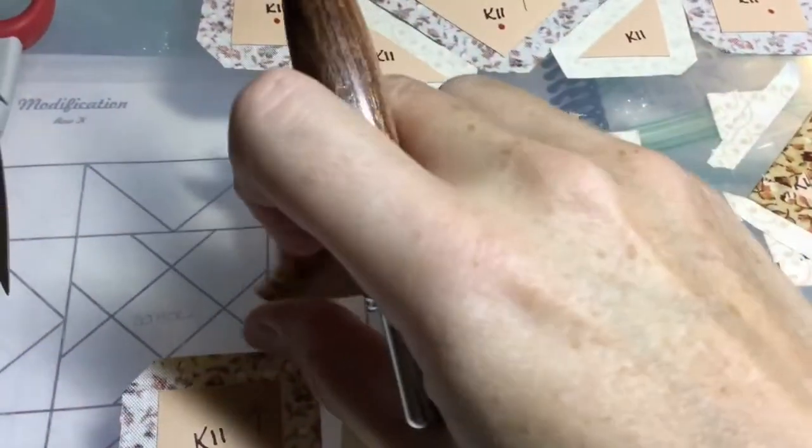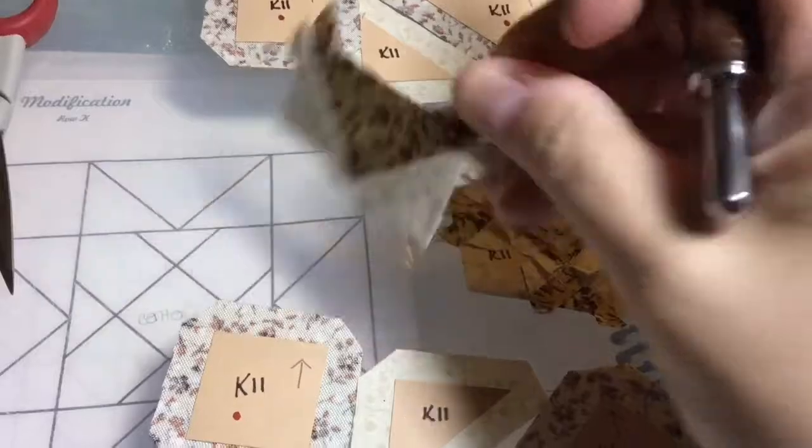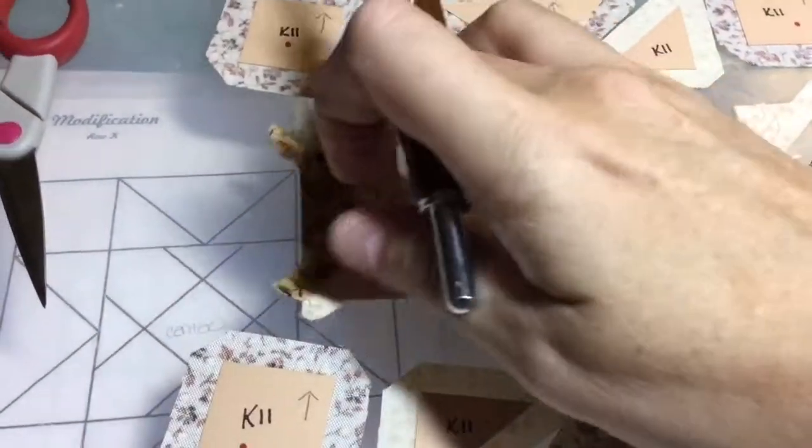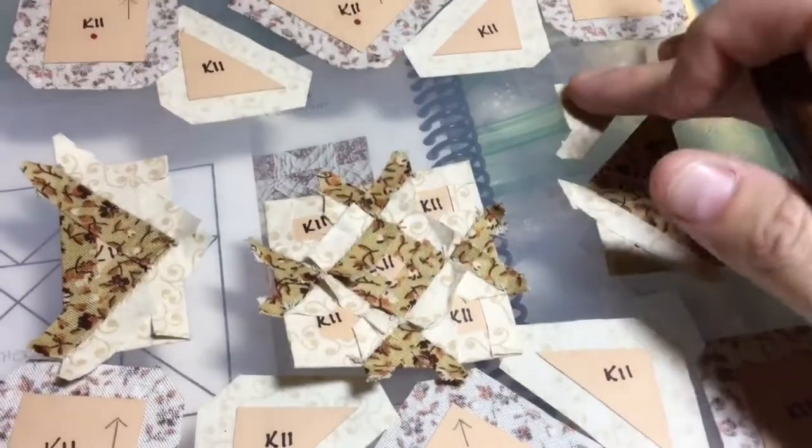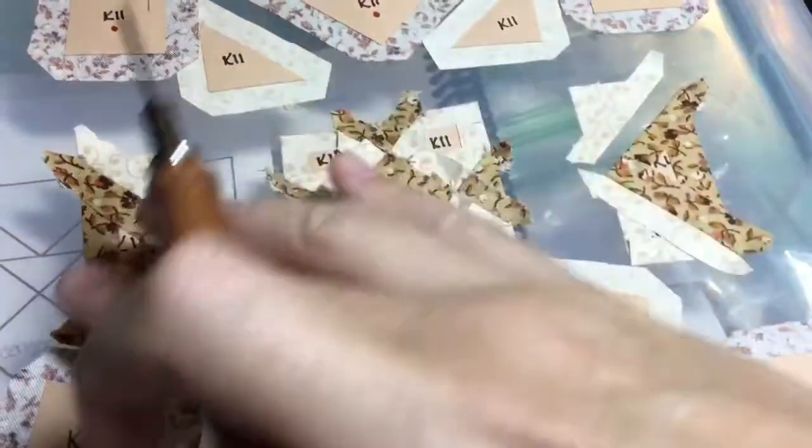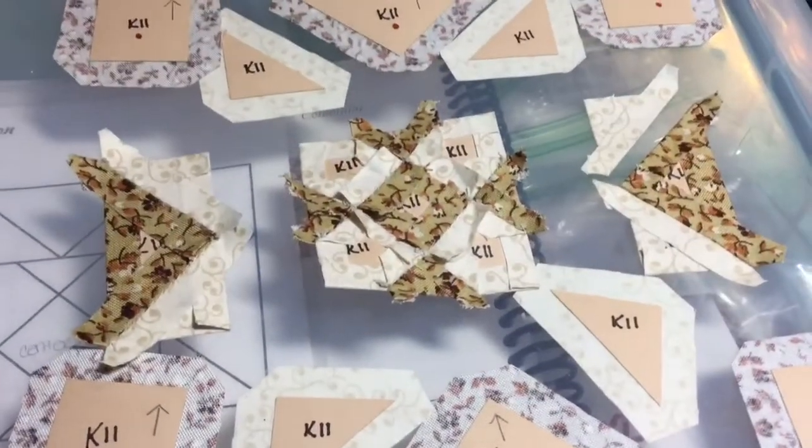So I've got this side flying geese unit all connected and I'm going to do this one. I got this taped and I will connect this one and then I will be able to connect all three of these to make this center row.